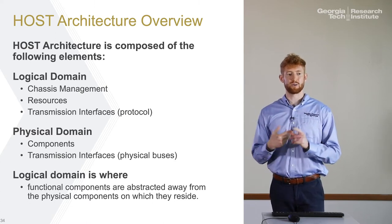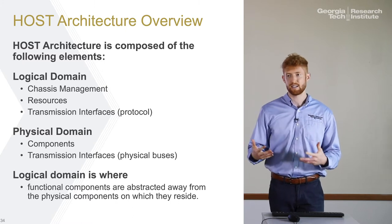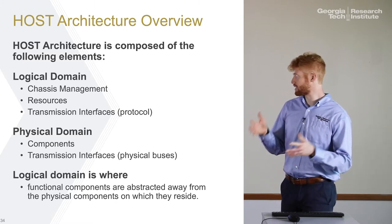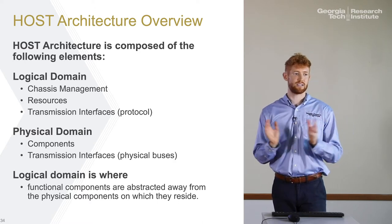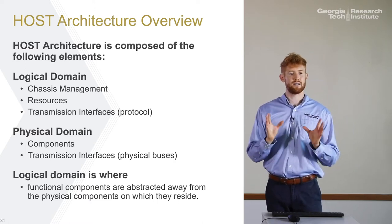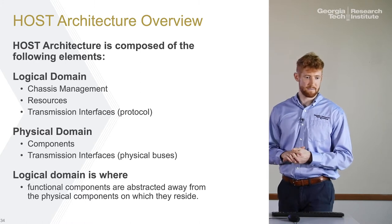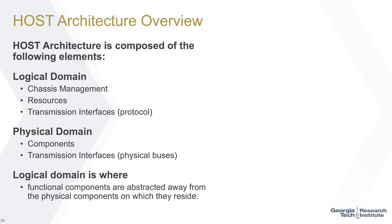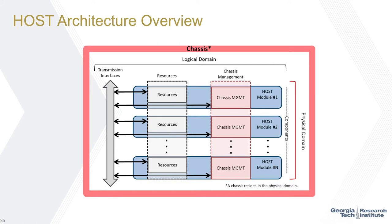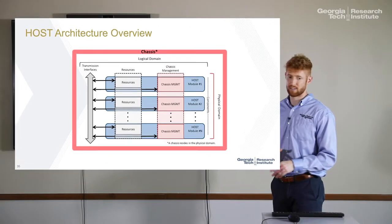Then you have the physical domain: what are the actual form factors and the actual interfaces that are required? At this level, there are no actual definitions — it's just saying these are what are required in an embedded computing architecture. At a very high level, this is defining that a computing environment will have some type of chassis, a bunch of modules that need to contain resources and chassis management, and all have to communicate in some way. How these things are done is defined at the Tier 2 level.